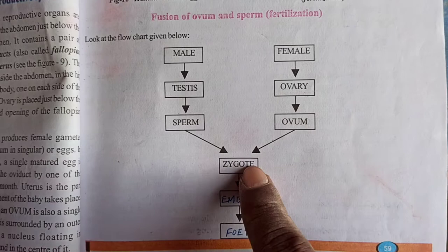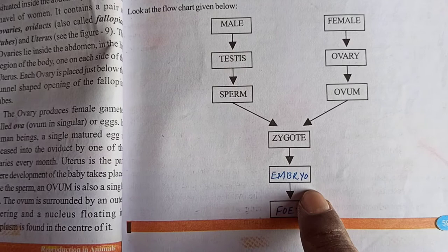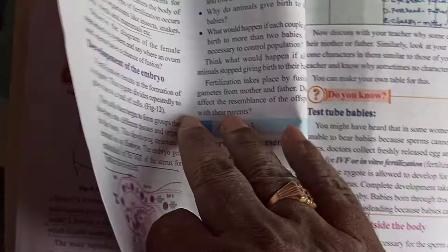Zygote means the diploid condition, the 2N condition. The zygote develops into an embryo, and the embryo develops into a fetus. After the third month of pregnancy, when the body organs are fully developed, the baby is called a fetus. Fetus leads to childbirth. The fusion of male and female gametes inside the female body is called internal fertilization.